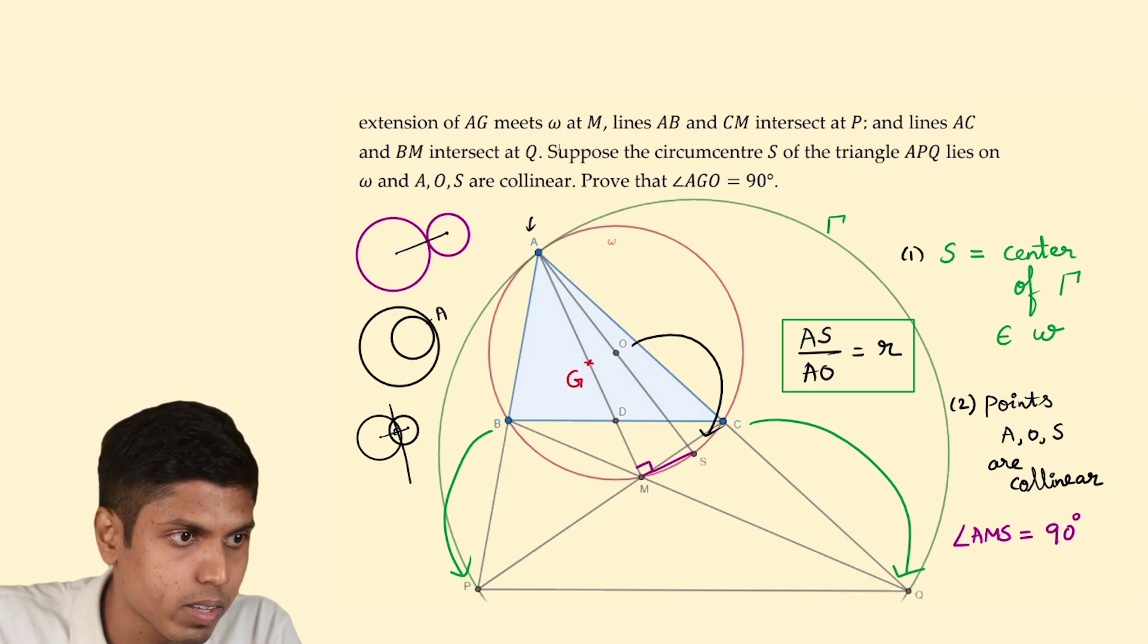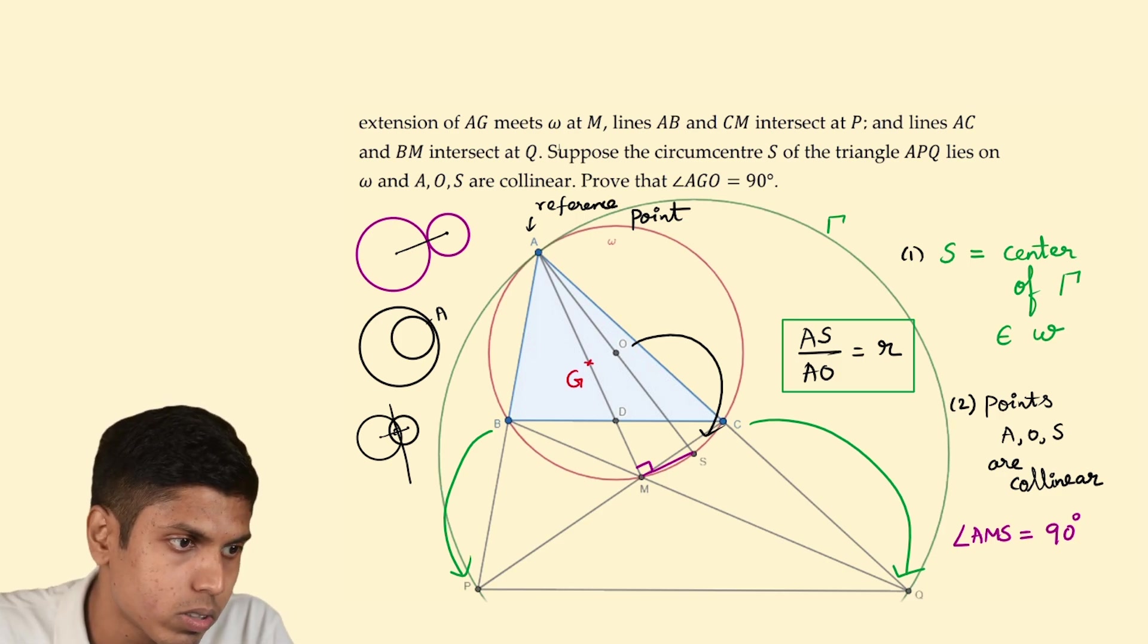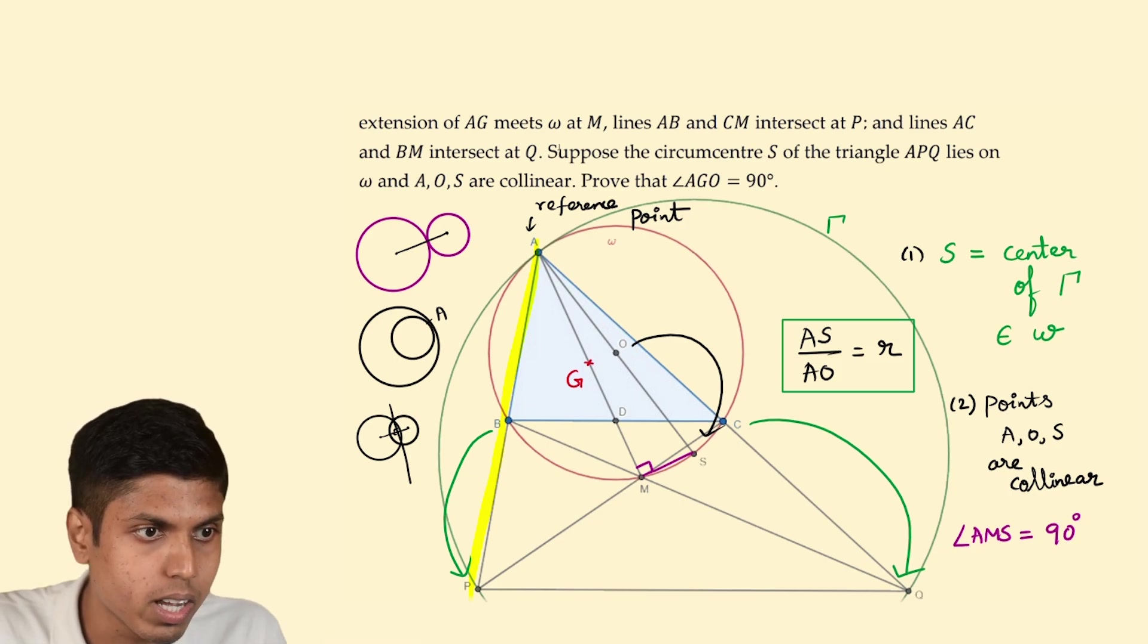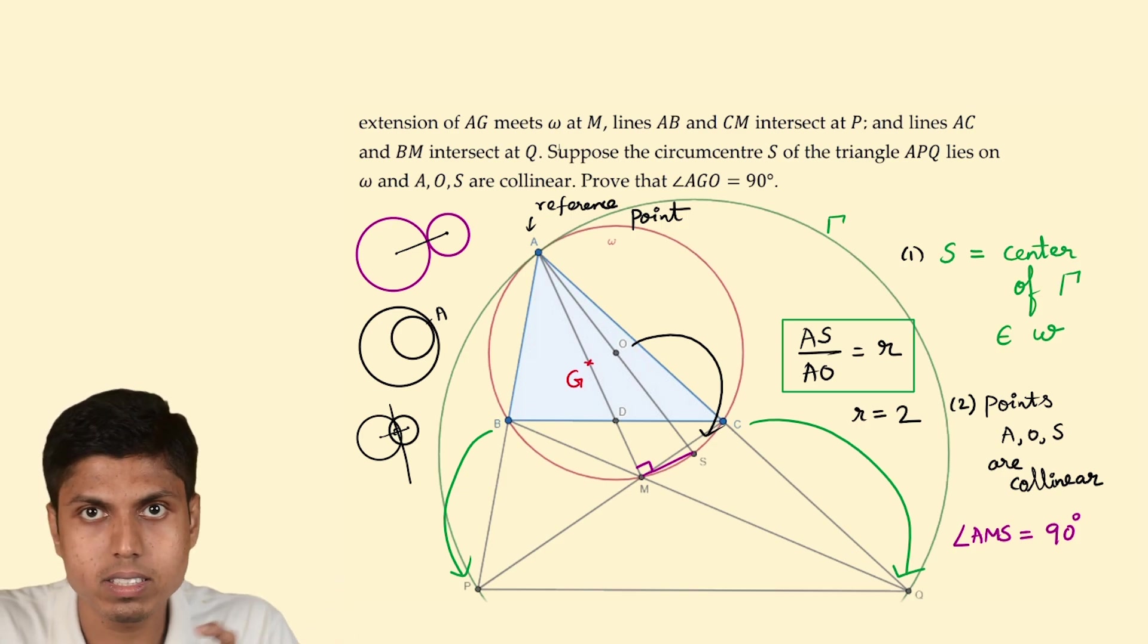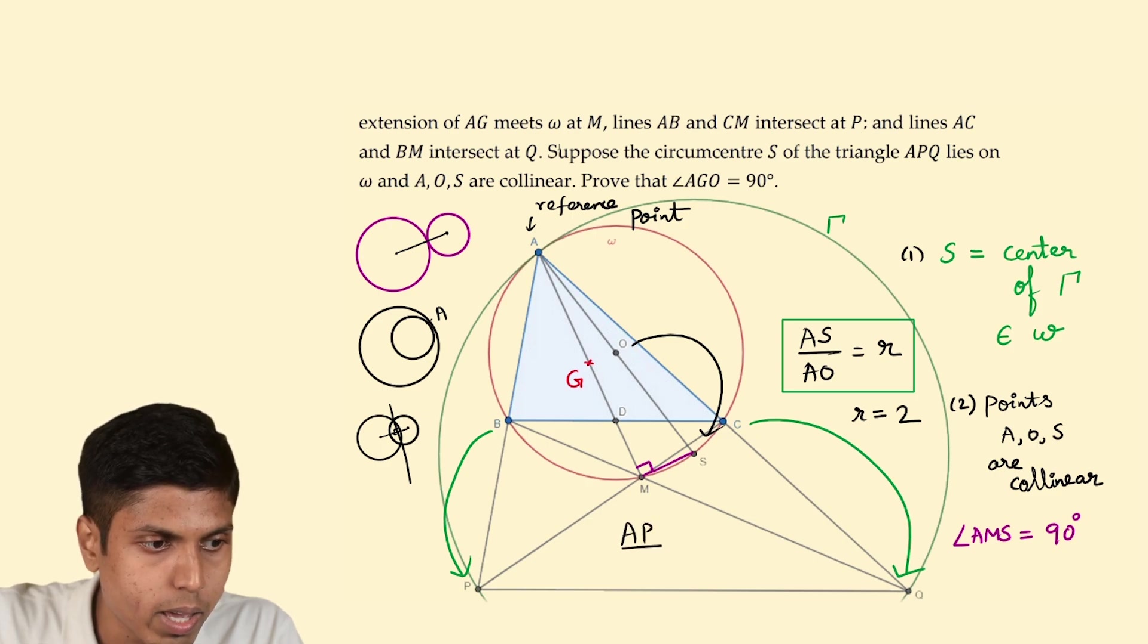This is because homothety preserves the collinearity of the transformed point with the original point and the reference point A. So B goes to P and C goes to Q upon this homothety. The resulting point should lie on AB of the transformed point of B. It intersects the circle gamma at P so B goes to P. Similarly, AC intersects gamma at Q so C goes to Q. I know that R equals 2 because AS is the diameter, AO is the radius, and hence R is 2. Since point B goes to point P, we get that AP by AB will also be equal to R and it is equal to 2.